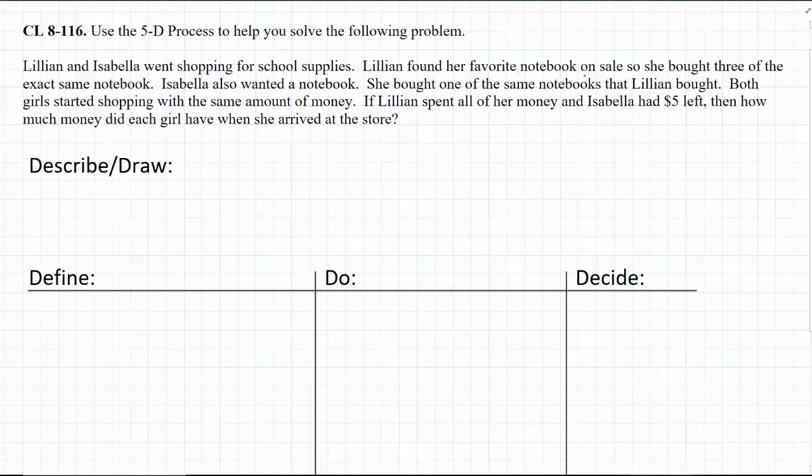Lillian found her favorite notebook on sale, so she bought three of the exact same notebook. Isabella also wanted a notebook. She bought one of the same notebooks that Lillian bought. Both girls started shopping with the same amount of money. If Lillian spent all her money and Isabella had $5 left, then how much money did each girl have when she arrived at the store?